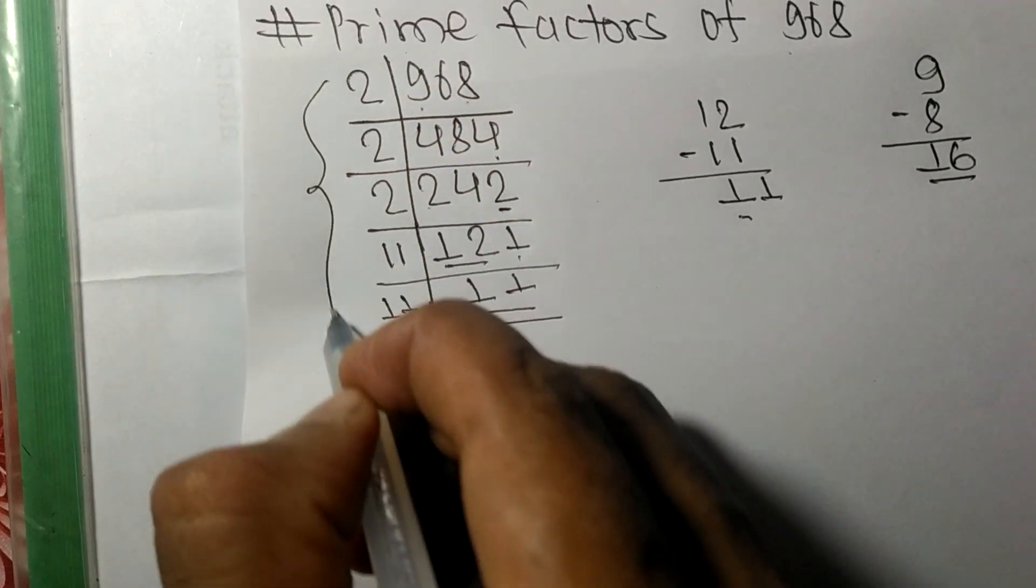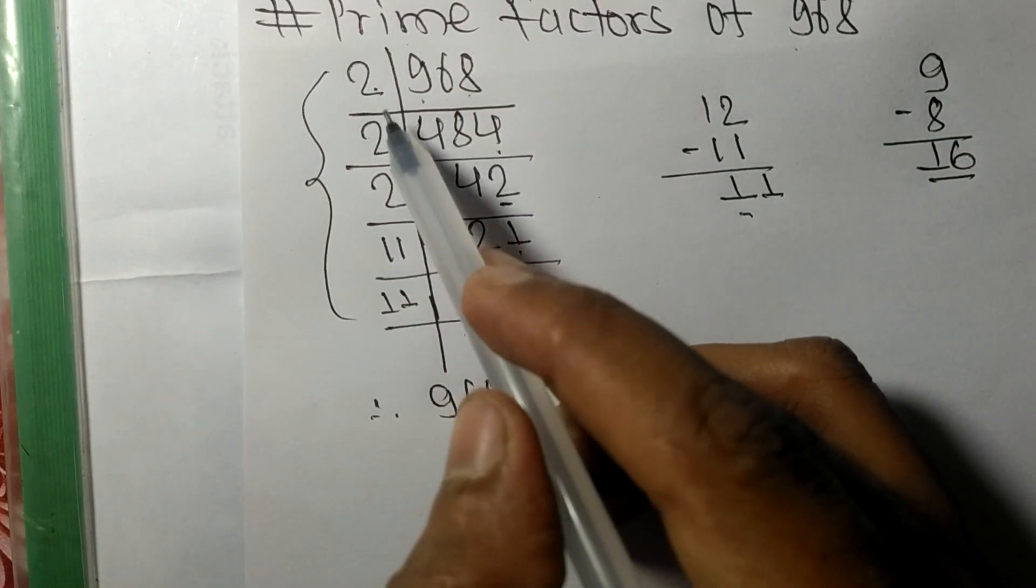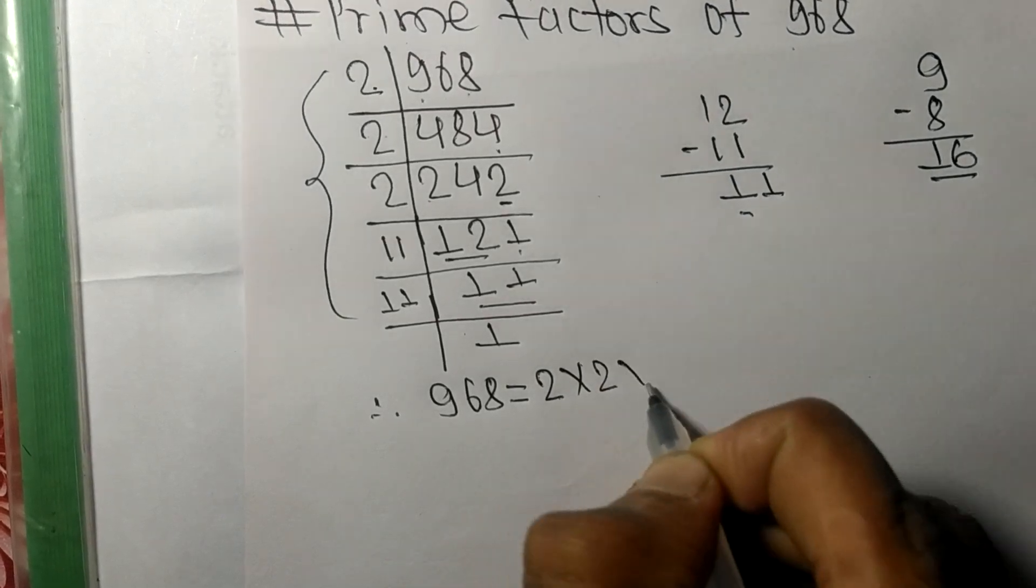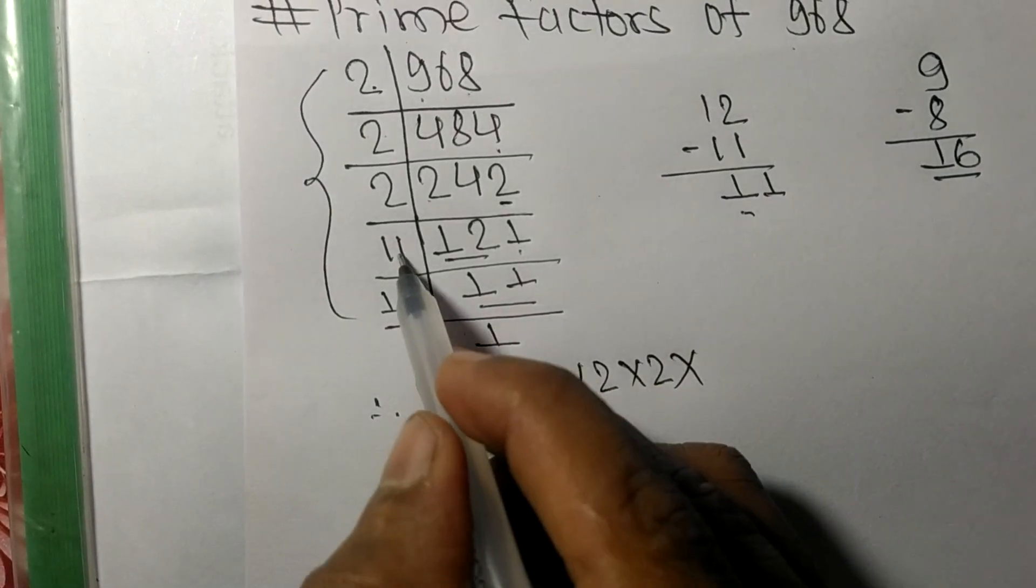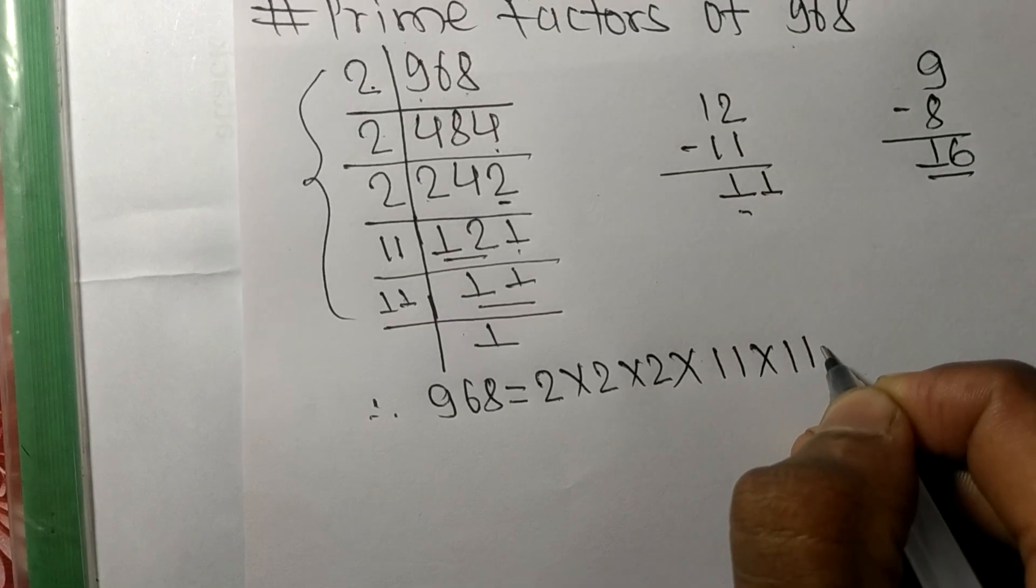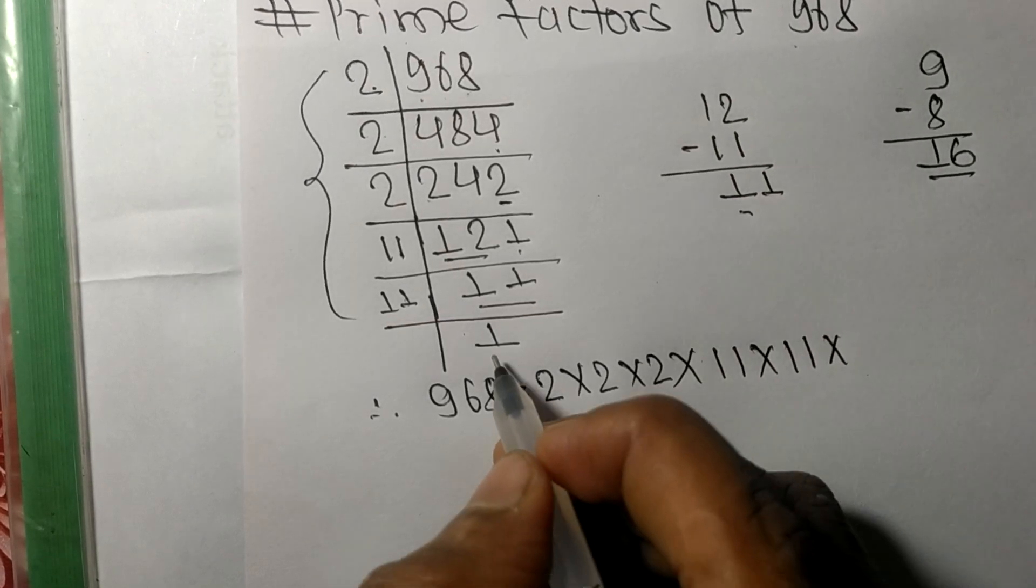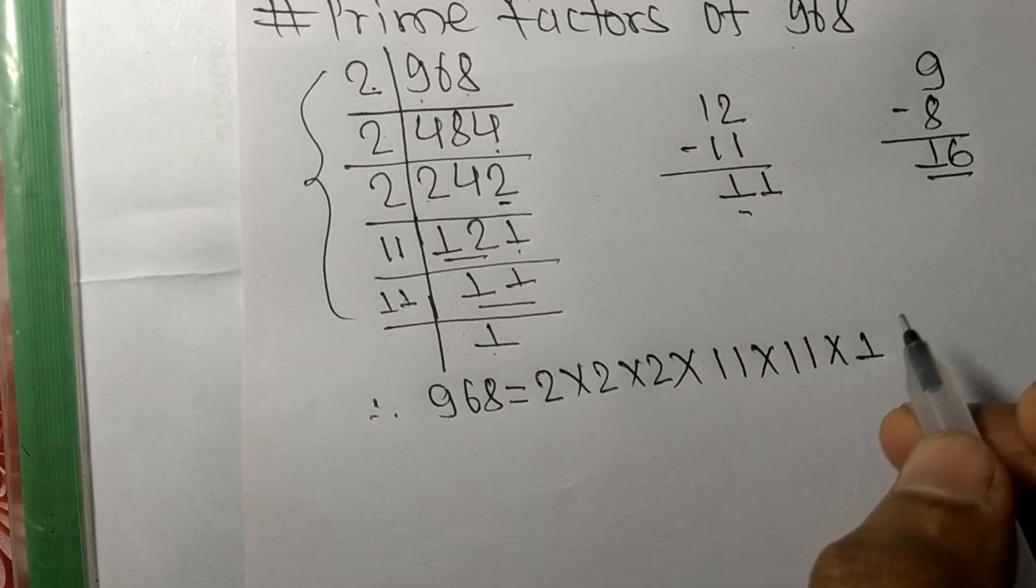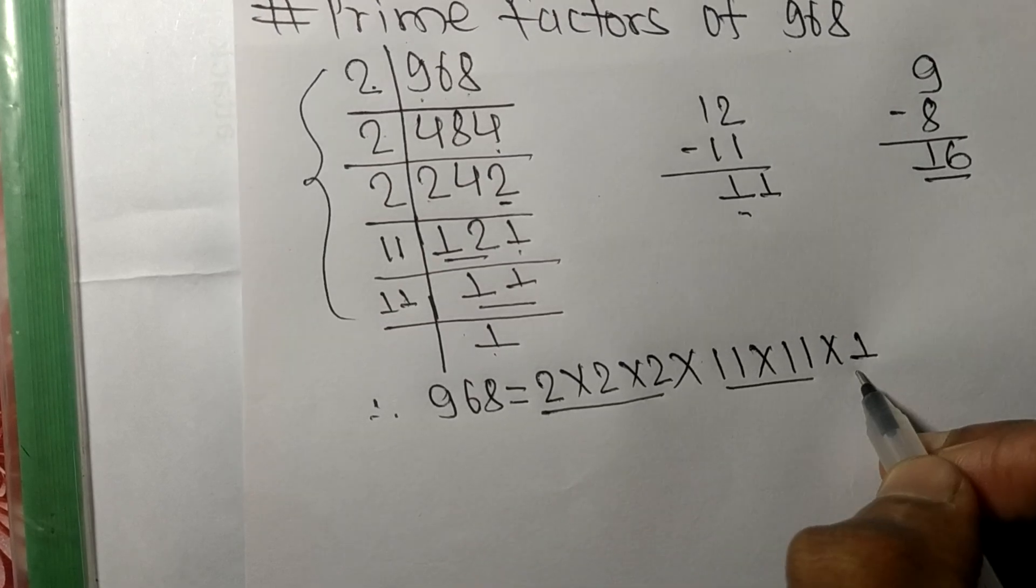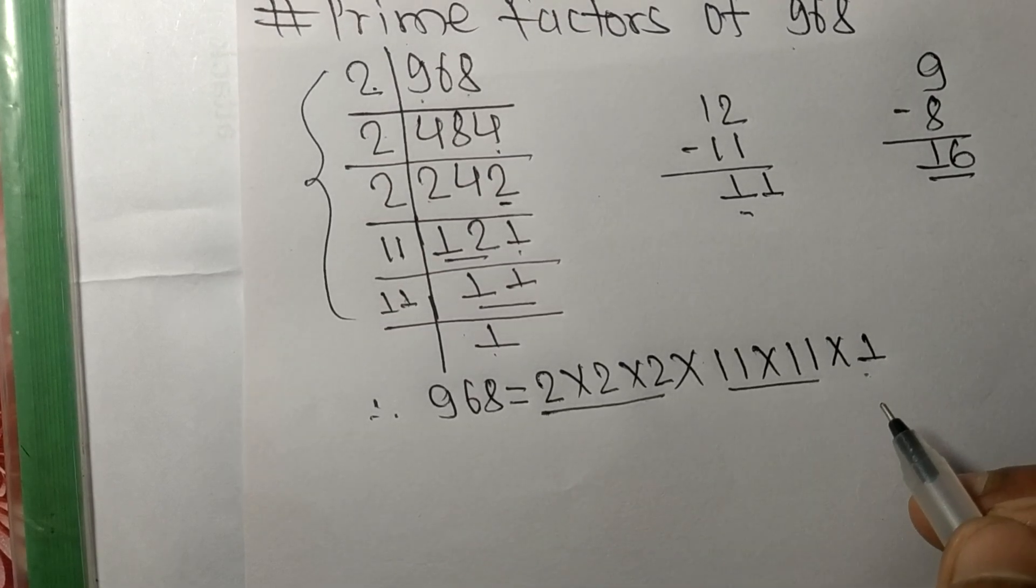From this side it is 1, 2, 3 times 2, so 2 times 2 times 2 times 11 times 11. And from here it is 1. So these 2, 11, and 1 are the prime factors of 968.